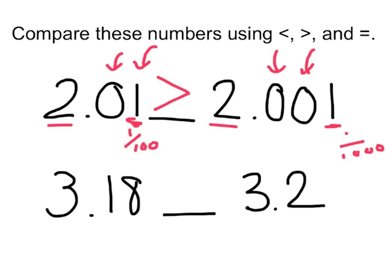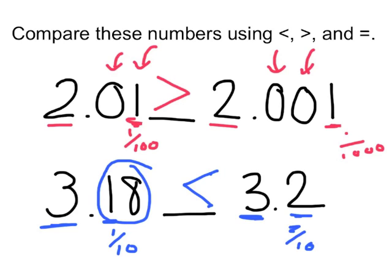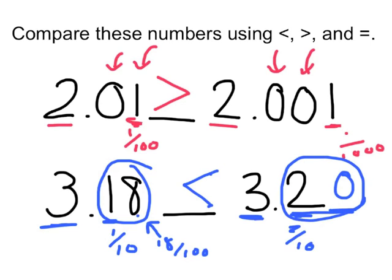This next one, we've got three whole, that's the same. Now we look at the tenths place. This is only one tenth, this is two tenths. That means that three and two tenths is larger, even though this looks like it could be bigger. This is actually eighteen hundredths. If I look here, there's nothing in my hundredths place, so that's a zero, and that means that this is actually twenty out of a hundred, which is larger than eighteen hundredths. You need to pay attention to the place values.